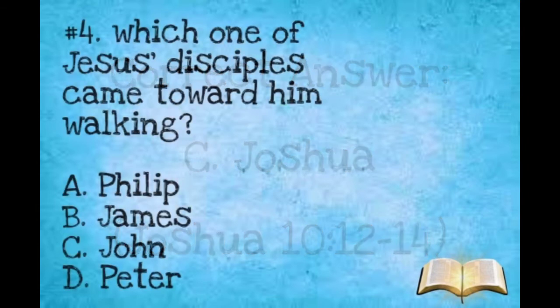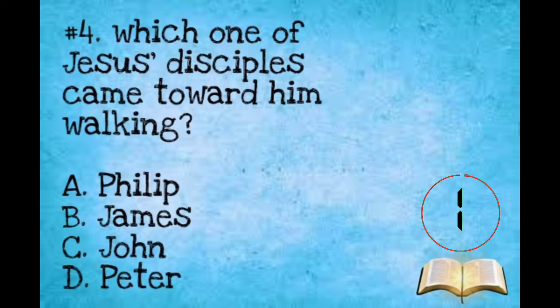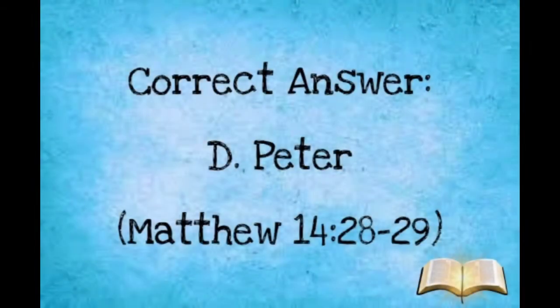Question number four: Which one of Jesus' disciples came toward him walking on the water? A: Philip. B: James. C: John. D: Peter. The correct answer is letter D, Peter.